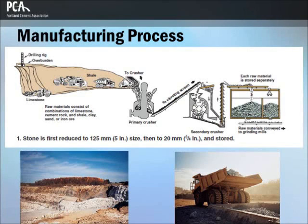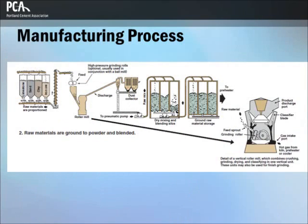Cement manufacturing can be broken into four stages. During stage 1, selected raw materials are transported from the quarry and crushed to the size of a typical gravel. During stage 2, the stone is then milled and proportioned so that the resulting mixture has the desired chemical composition.